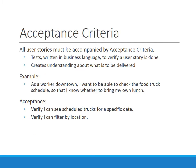All user stories must be accompanied by acceptance criteria. They're simply tests written in business language to verify that a user story is done. They create the understanding about what is to be delivered. You can think of them in terms of functional requirements, but they're not detailed — you're not defining every little nuance, just the things that are important to say that the intent of the capability has been met. For example, for the food truck story: verify I can see scheduled trucks for a specific date, and verify I can filter by location.